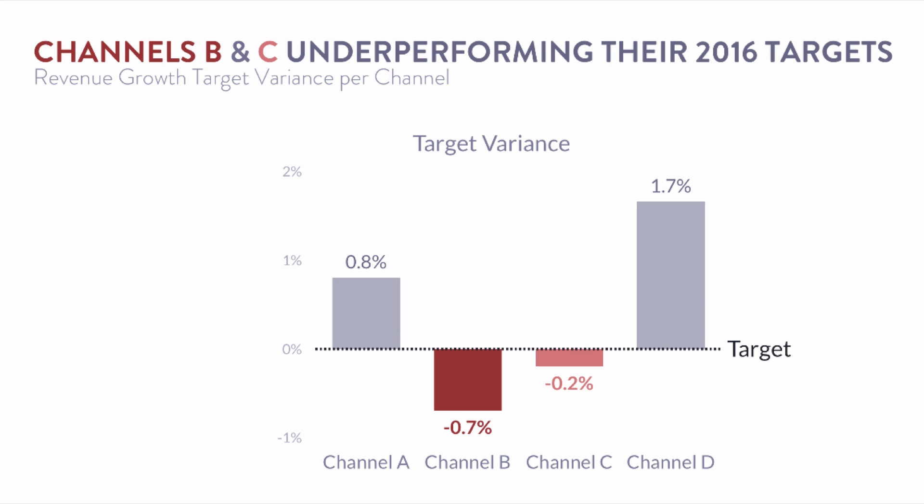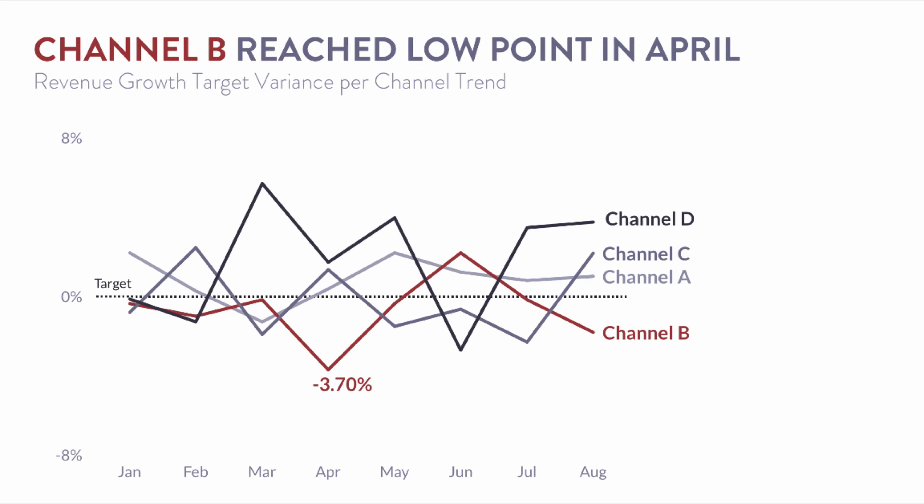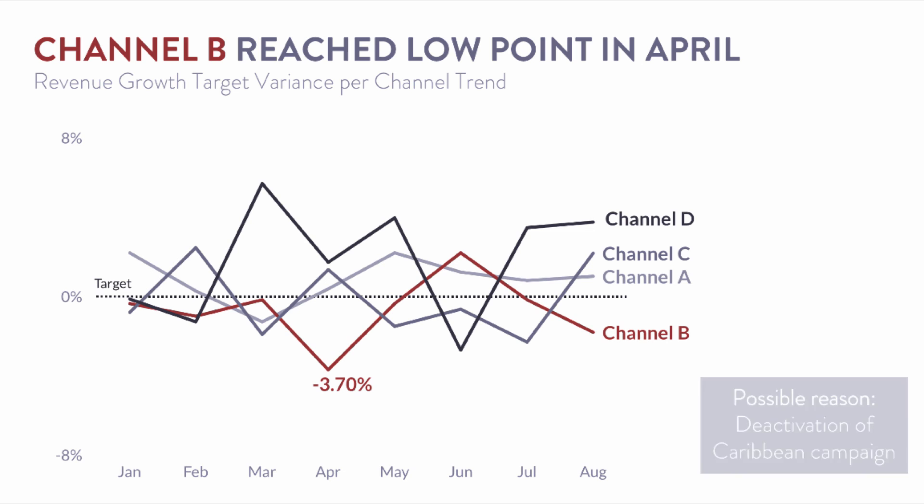If you wanted to highlight how well Channels A and D are doing, you could use a gentle neutral blue tone. I don't suggest green because of the prevalence of color blindness in our organizations. Taking this and leading into the target variance trend line, we can see that Channel B reached a low point in April. A possible reason could be that we deactivated the Caribbean hotel campaign, so growth in that area went lower. This is how we begin to tell a story using a sequence of views.